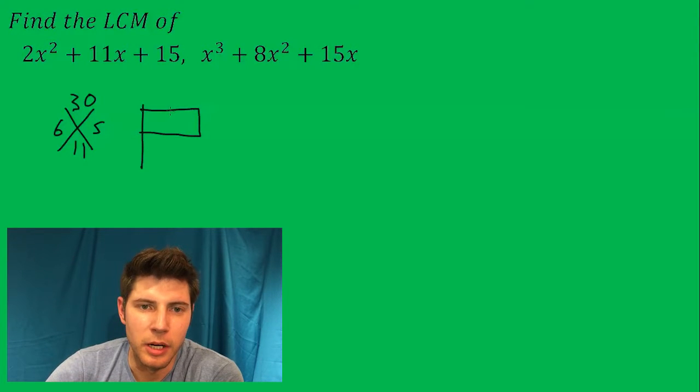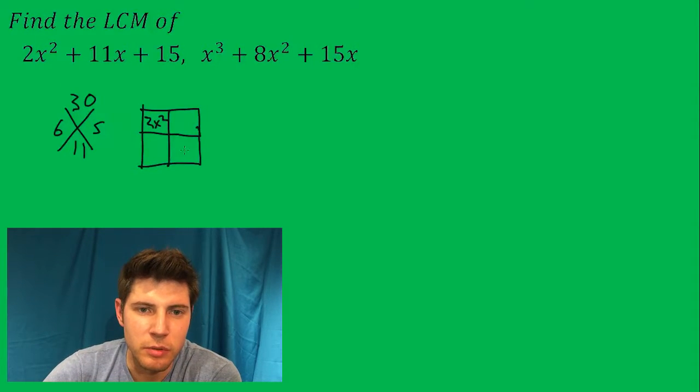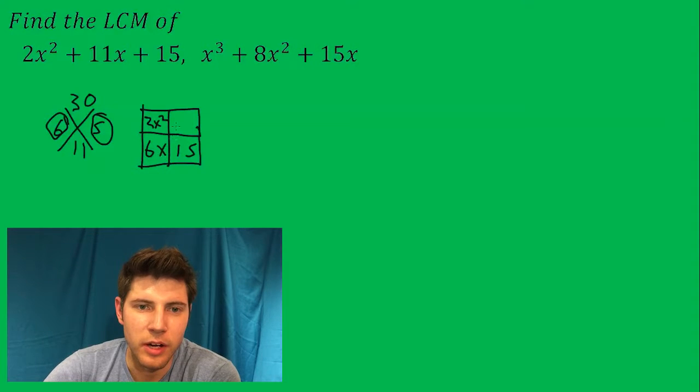So we're gonna make a little box and this 2x squared gets rewritten. This 15 gets rewritten but we're gonna break this 11x up according to what we found here. So it's gonna be 6x and 5x.